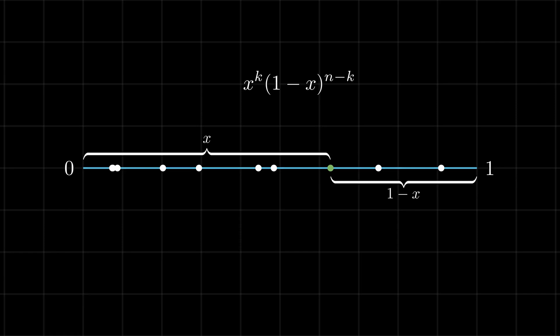Then, the probability that any k of the n white points lies to the left of the green point is n choose k times x power k times 1 minus x power n minus k. Because the position of the green point itself is uniformly distributed in the interval, the total probability is given by the integral of this expression from 0 to 1.